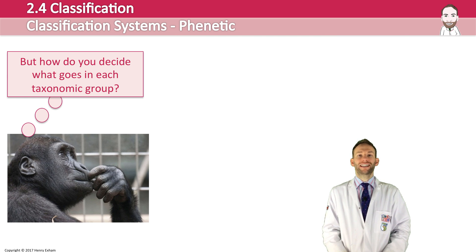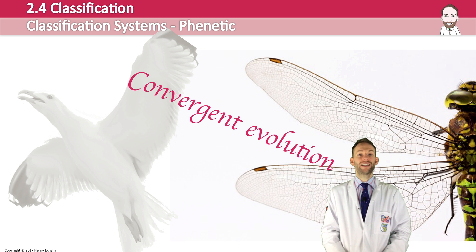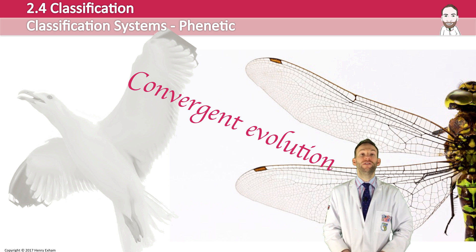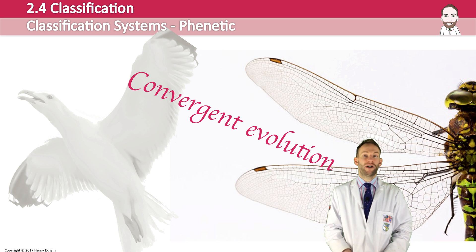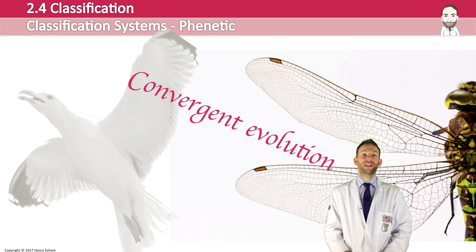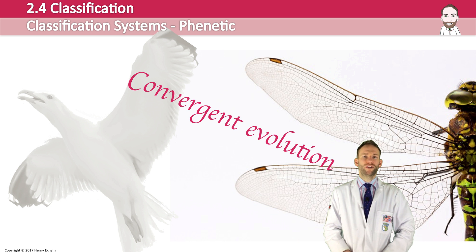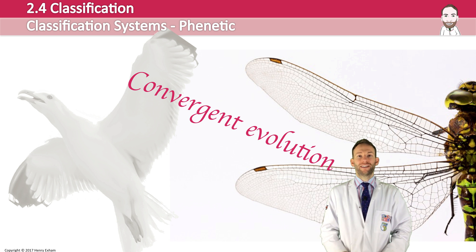There are problems with the phonetic method: it does not take into account the effects of evolutionary change on similarities and differences between organisms. For example, convergent evolution — two organisms evolving completely independently but converging on the same adaptations and morphology. Take wings: a dragonfly and a seagull both have wings, yet they are completely different organisms with different structures. You wouldn't want to classify these two things together.